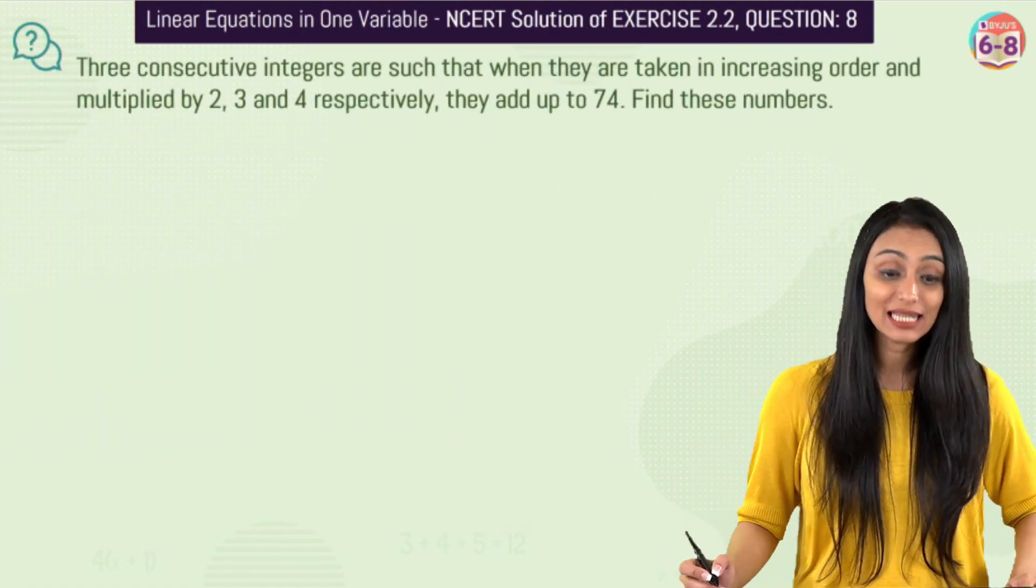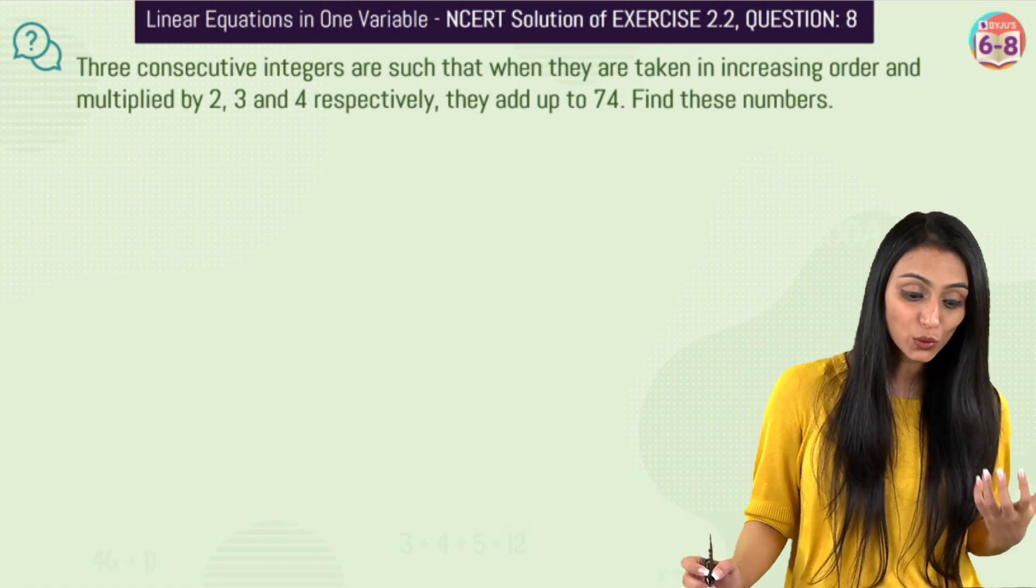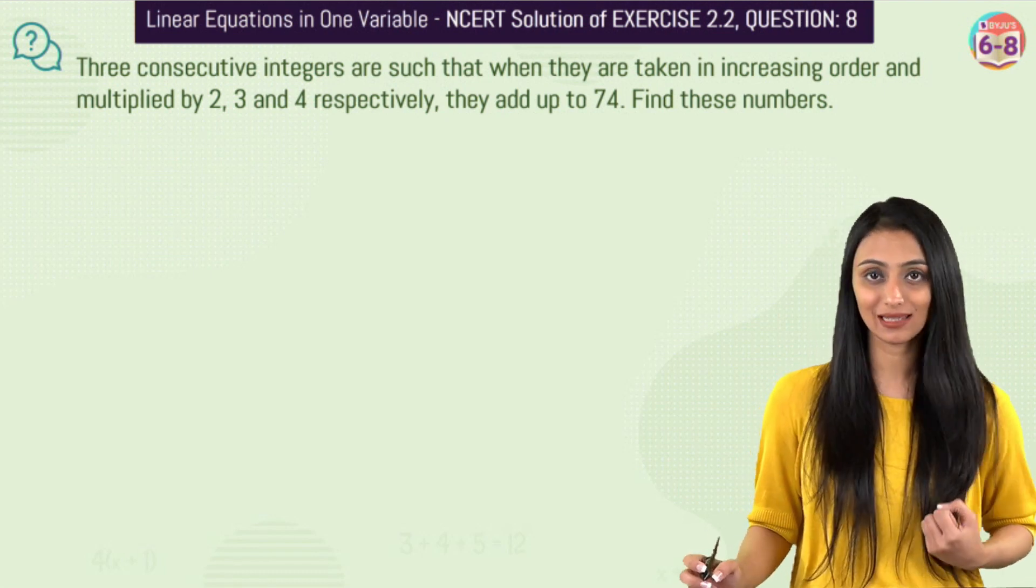The question is: three consecutive integers are such that when they are taken in increasing order and multiplied by 2, 3, and 4 respectively, they add up to 74. So what are these numbers?